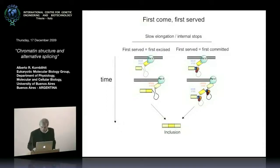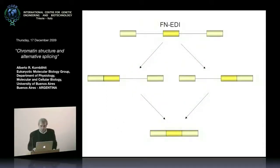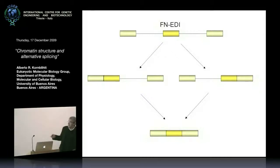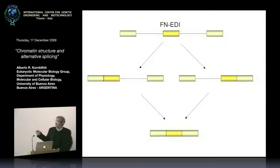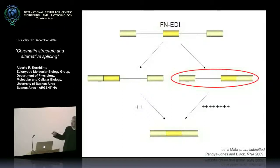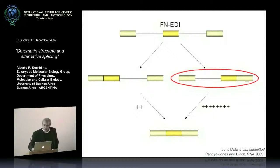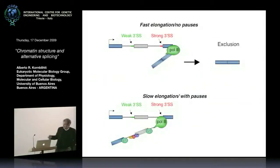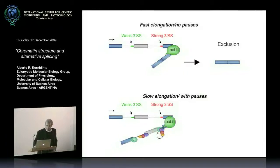The evidence for this is that we can have two different intermediates in splicing that lead to inclusion: one where the first intron is excised first, and one where the second intron is excised first. We found that the second pathway — second intron excised first — is much more abundant. What actually happens is not a first excision but a first recruitment, with the second intron excised first, leading to inclusion.